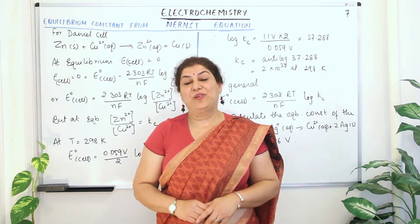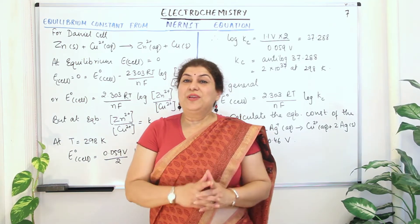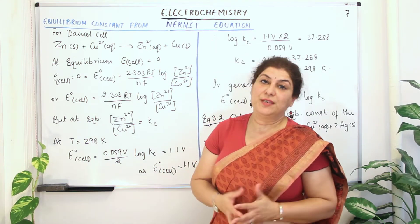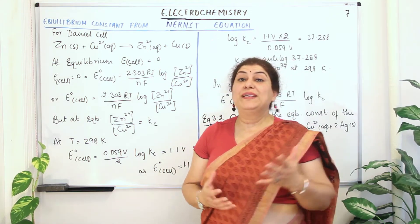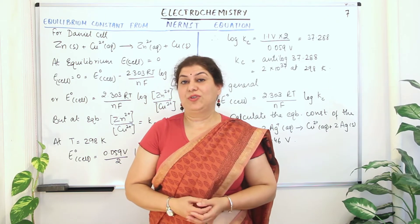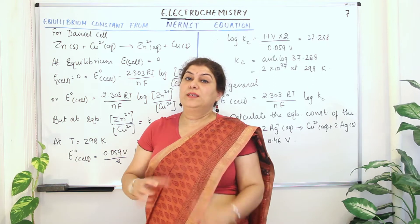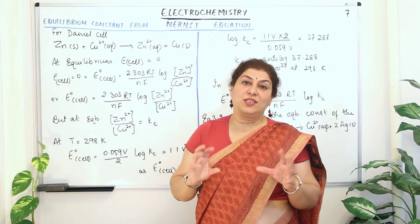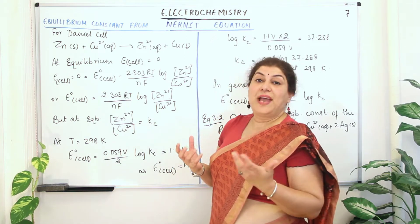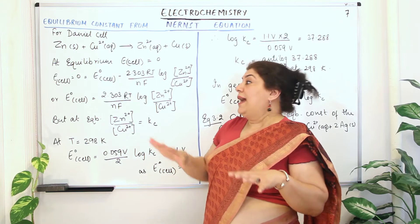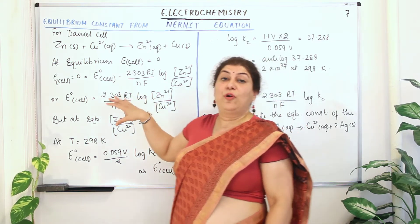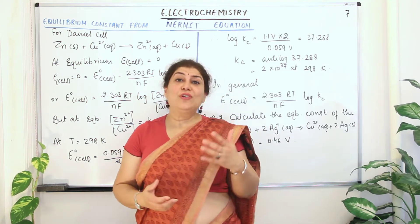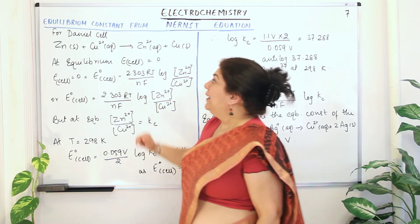Welcome to Part 7 of this chapter on Electrochemistry. Today I'm going to talk about how we can calculate the equilibrium constant from the Nernst equation. We've been working through the Nernst equation and did numerical problems based on it. We also learned that the later part of the Nernst equation, after the log, is Q — the reaction quotient. From this, the equilibrium constant Kc can also be calculated.